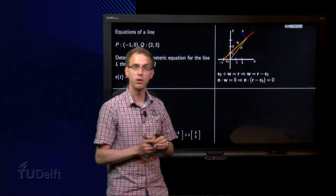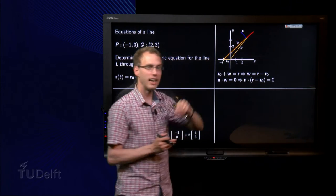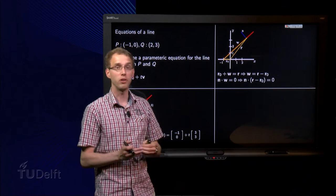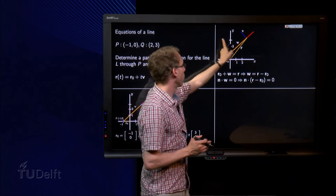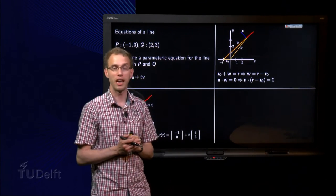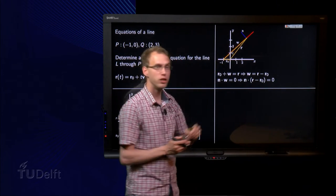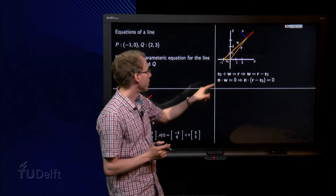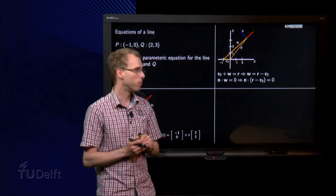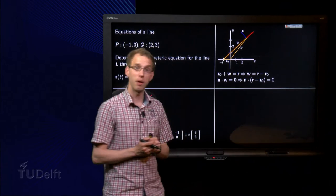And this vector n is the vector which is normal on the line, orthogonal to all points on the line. The normal vector. Now we know r0 plus w equals r. So we can find w. w equals r minus r0.